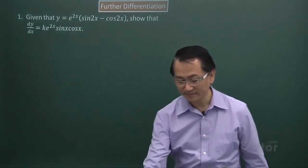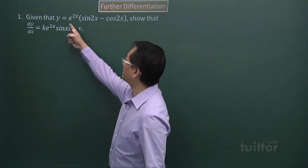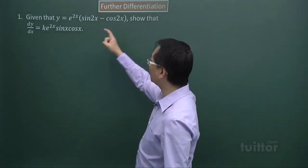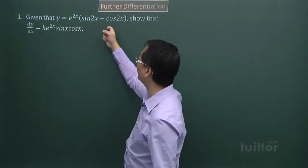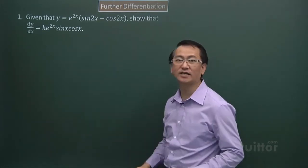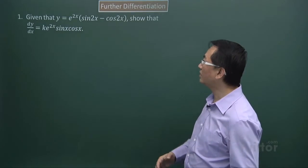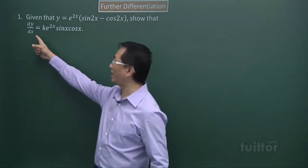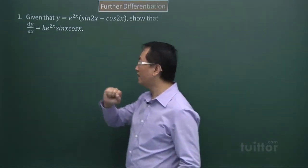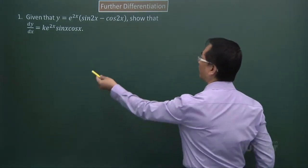Let's look at question one. For question one, we have this equation here. Look closely, you have the exponential expression multiplied to, within the set of brackets, two trigonometric terms. So what we need to do, since we are required to find the first derivative, we have to use the product rule of differentiation.